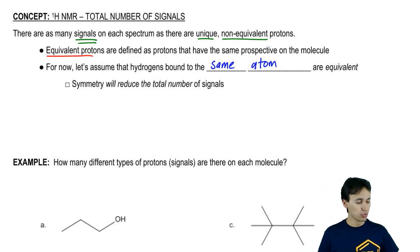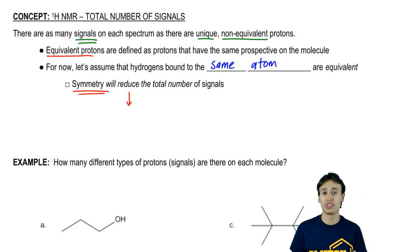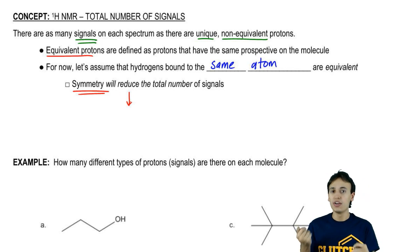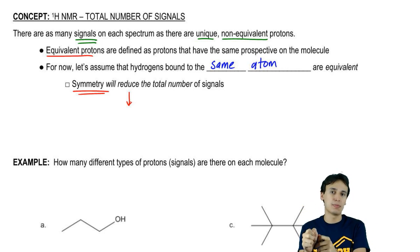In general, a rule that we can go by is that any type of symmetry is going to reduce the total number of signals. This is because if you have any planes of symmetry, then you're by definition going to have some protons that are the same as other protons on the other side of the molecule. Symmetry is something you have to watch for when we're using this type of information.